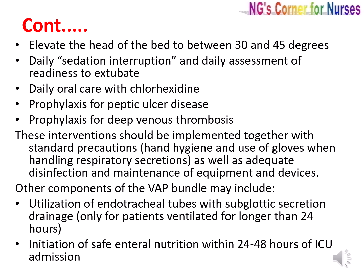It has been estimated that over half the cases of ventilator associated pneumonia may be preventable with evidence-based strategies with an impact on mortality. The following bundle of ventilator care processes have been shown to substantially reduce VAP rates: elevate the head of the bed to between 30 and 45 degrees; daily sedation interruption and daily assessment of readiness to extubate; daily oral care with chlorhexidine; prophylaxis for peptic ulcer disease; and prophylaxis for deep vein thrombosis. These interventions should be implemented with standard precautions and adequate disinfection and maintenance of equipment. Other components may include use of endotracheal tubes with subglottic secretion drainage for patients ventilated longer than 24 hours and initiation of safe enteral nutrition within 24 to 48 hours of ICU admission.